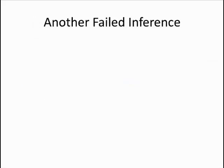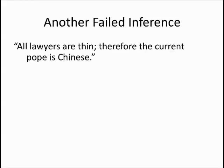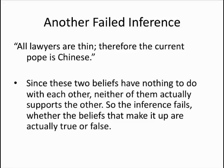Let's take a look at another failed inference. Suppose we make the following argument: All lawyers are thin; therefore, the current Pope is Chinese. As you can see, there is no relationship between thin lawyers and the purported Chinese-ness of the Pope. It's what a logician would call a non-sequitur, which is a Latin term that means "it doesn't follow" — that is to say, the conclusion doesn't follow from the premises.